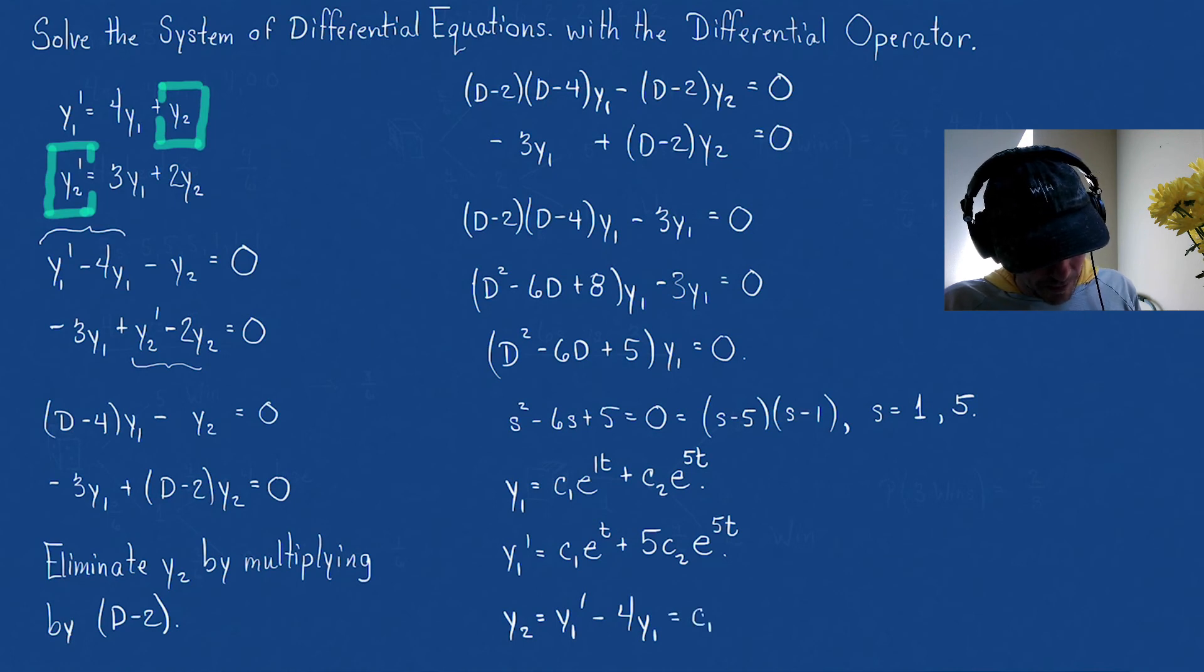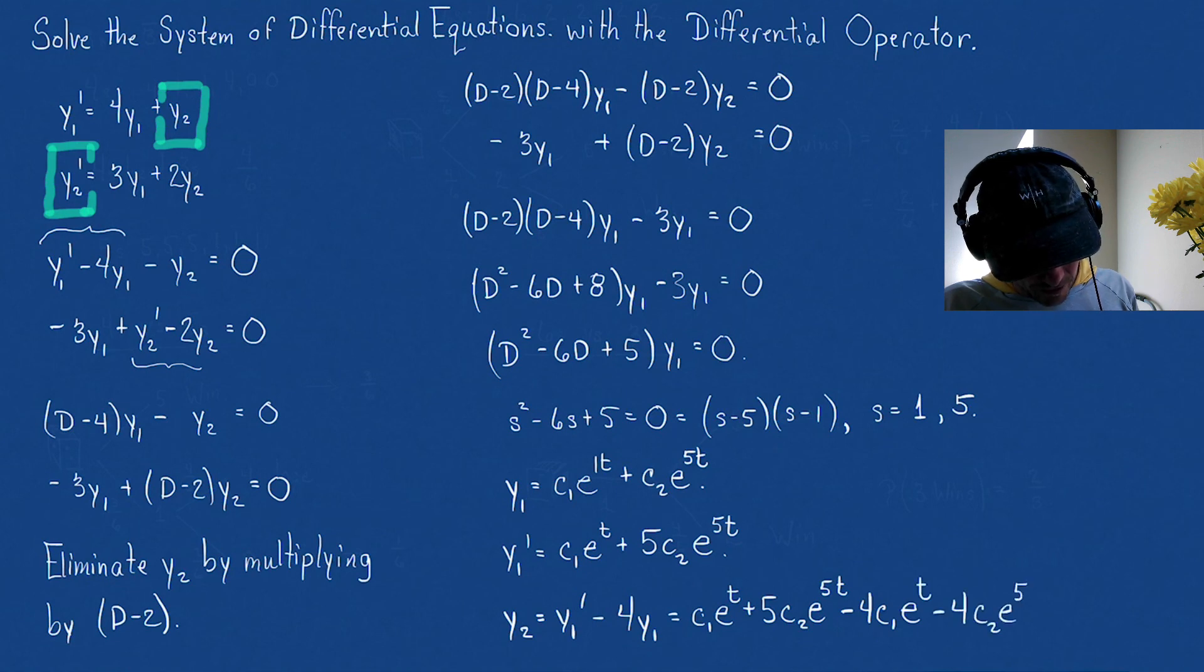So this just says that c1e^t + 5c2e^(5t), and now we're going to go minus, so minus 4 times y1. Well, that's c1e^t - 4c2e^(5t).